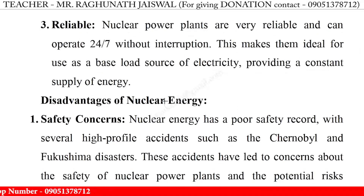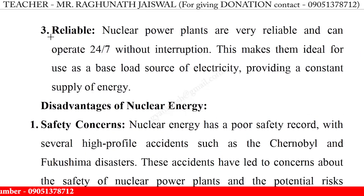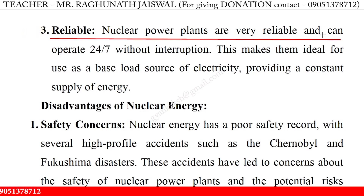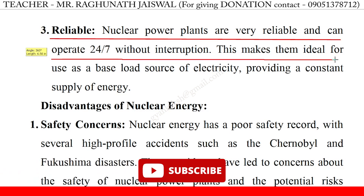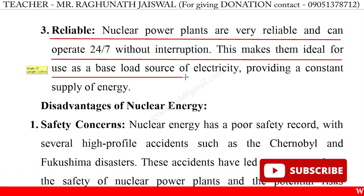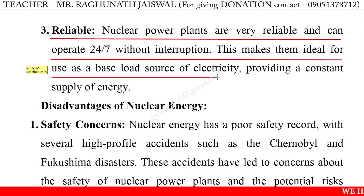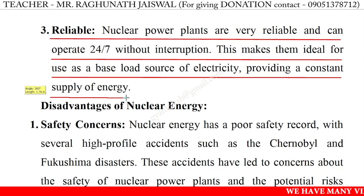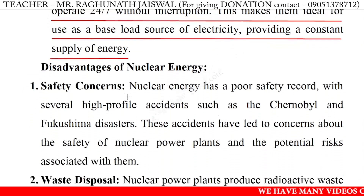Three, Reliable. Nuclear power plants are very reliable and can operate 24-7 without interruption. This makes them ideal for use as a base load source of electricity, providing a constant supply of energy.